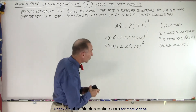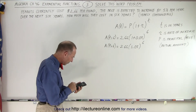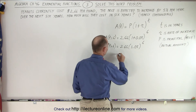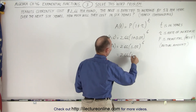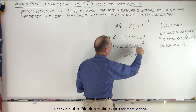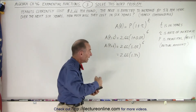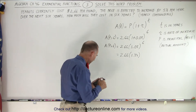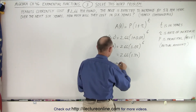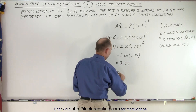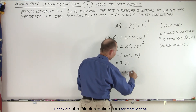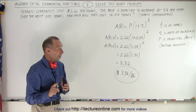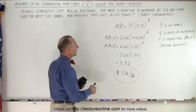We grab our calculator because without one that would be rather difficult. We plug in 1.05 raised to the sixth power, which gives us 1.34. So this equals 2.66 times 1.34 — that's 1.05 raised to the sixth power, meaning every year it increases by 5%. We multiply times 2.66 and get 3.56. The price will be $3.56 per pound six years from now.